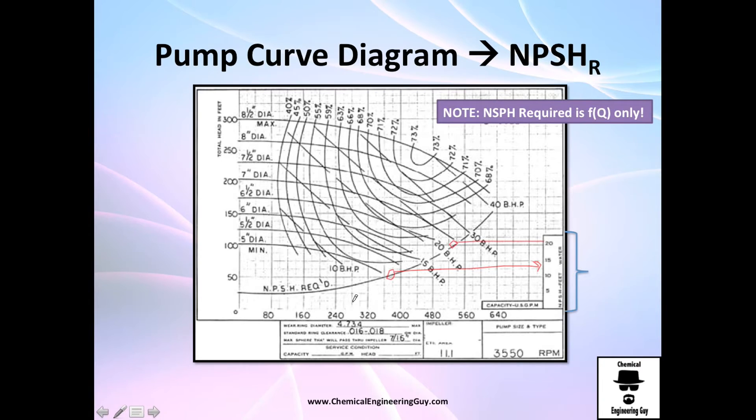As you can see, it is a function of volume. If I increase volume I increase NPSH R. If I decrease volume rate I decrease that. Let's do a little exercise.